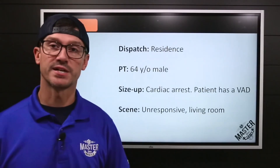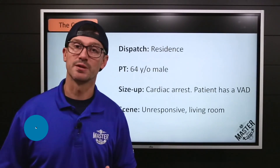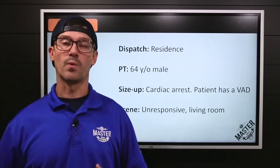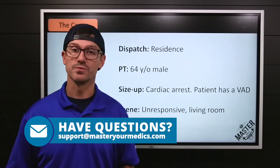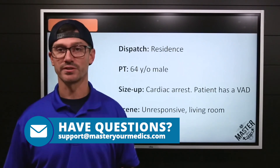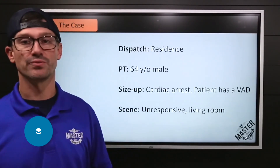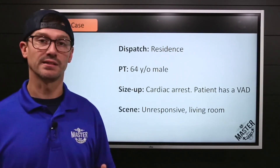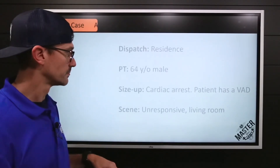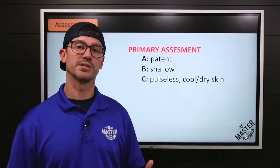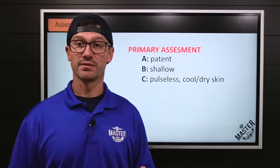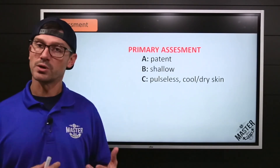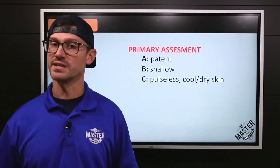Here's the scenario. You're dispatched to a residential neighborhood for a 64-year-old male in cardiac arrest. While en route, dispatch advises that the patient has a ventricular assist device. Once you arrive on scene, you find the patient unresponsive to all stimuli, lying on the living room floor. As you begin assessment, their airway is patent, they are breathing but very shallow, and they are pulseless with cool, dry skin.